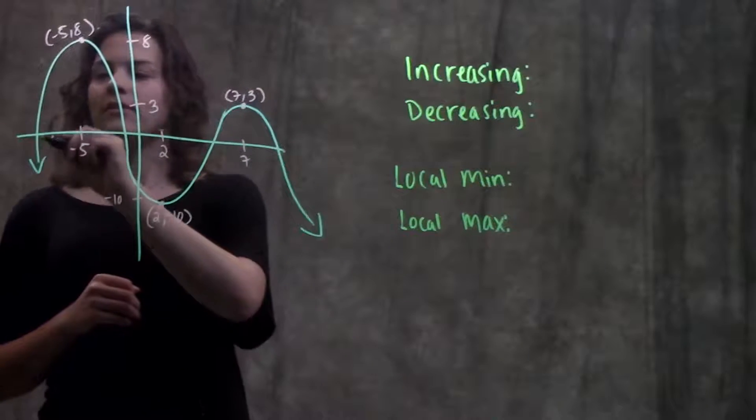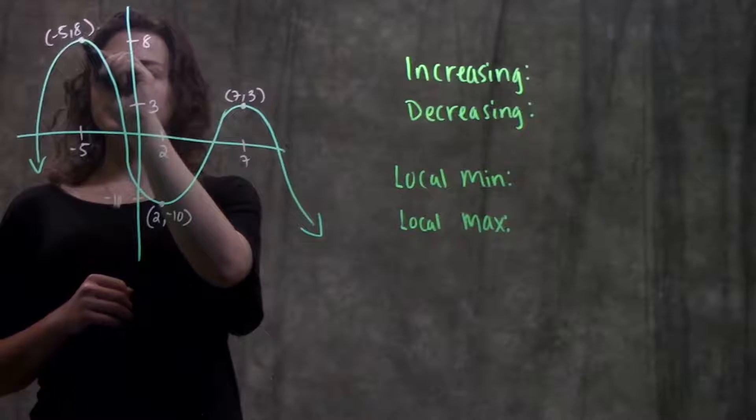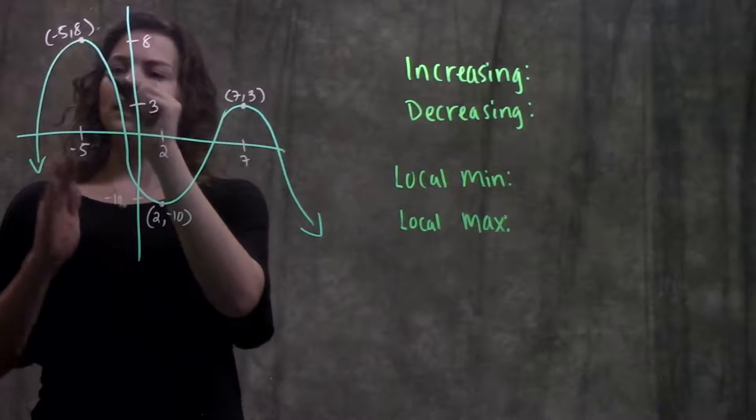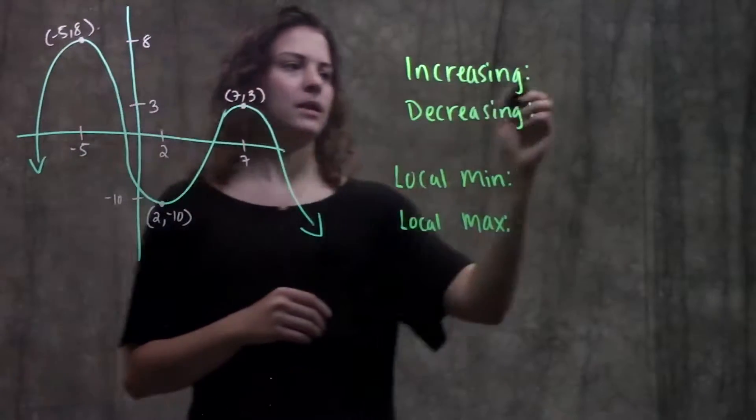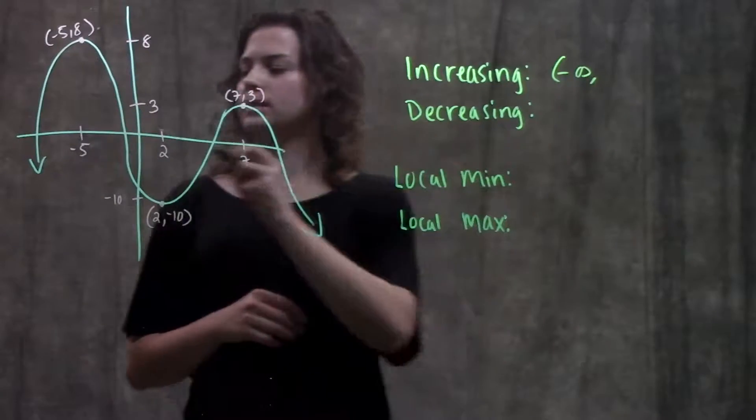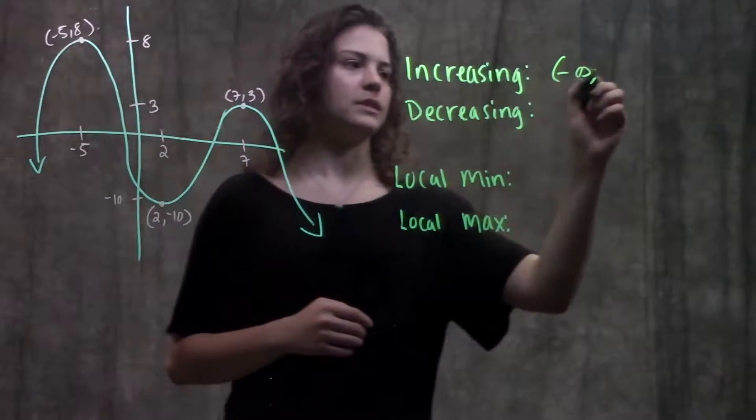We see that it's increasing from all the way down here up to this point, because at this point it all of a sudden starts going down. So it's increasing from negative infinity to this x-value here, which is negative 5.